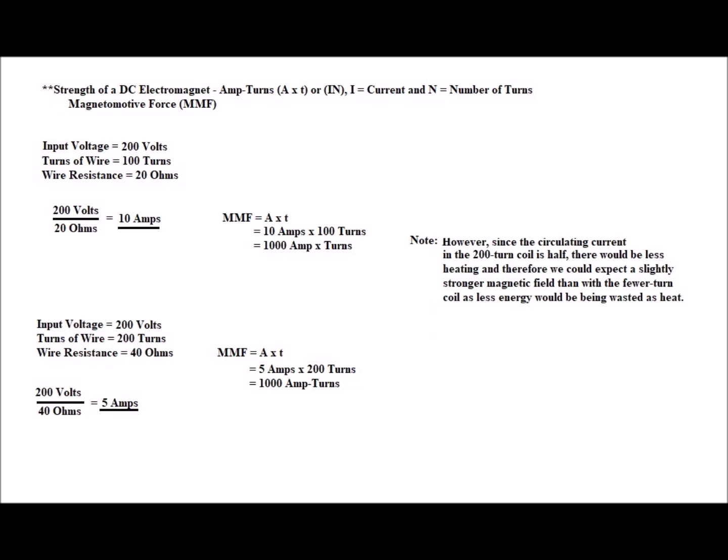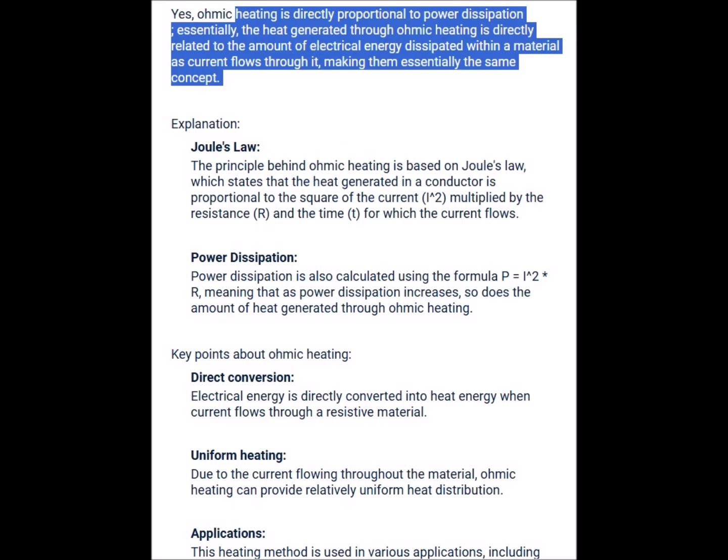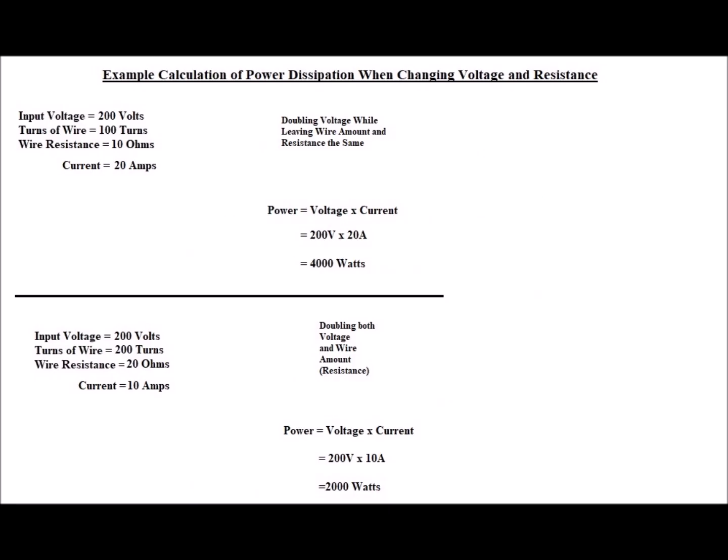Using the formula for power dissipation, we see that doubling the voltage while keeping the amount of wire and resistance the same yields a dissipation of 4000 watts. But when doubling the voltage while also doubling the wire and resistance, we get half the dissipation at 2000 watts. And since ohmic heating is directly proportional to power dissipation, we see that we can achieve the same magnetic strength with less energy wasted as heat.